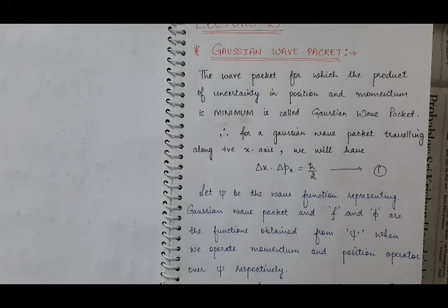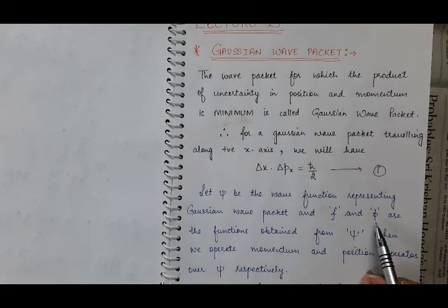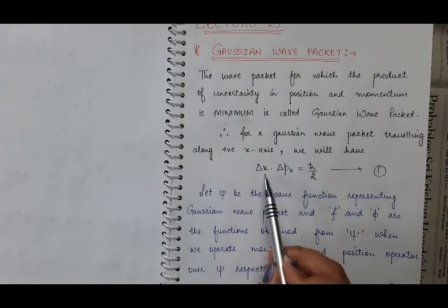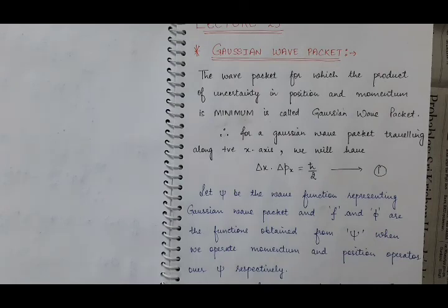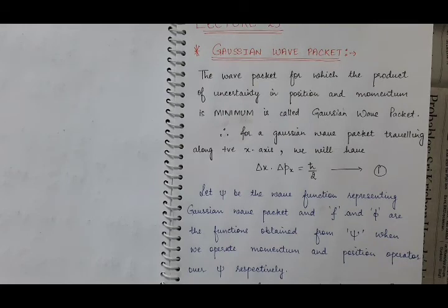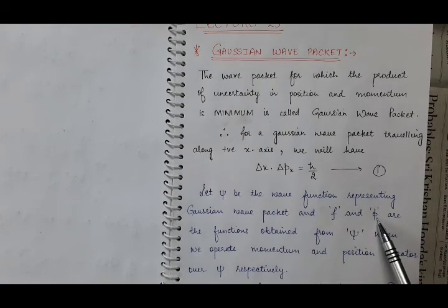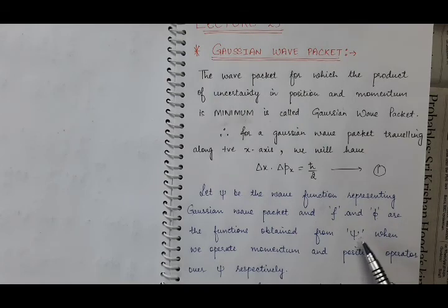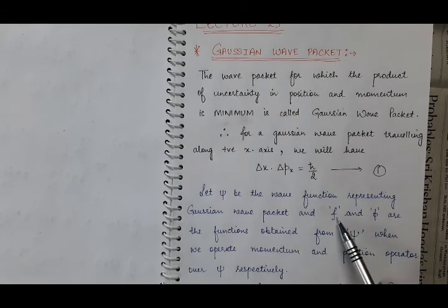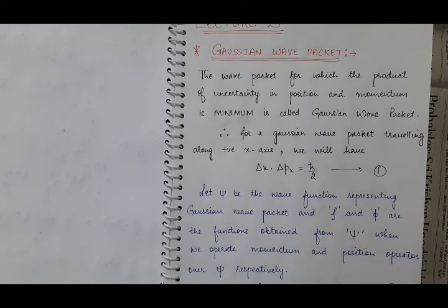For that, we have considered two functions: function f and function phi. In Heisenberg's uncertainty principle, we have position coordinate as well as momentum coordinate. It means we will deal with the position operator and the linear momentum operator. We will operate the position operator over psi, and it will give us a new function, suppose that function is phi. When we operate the linear momentum operator p over psi, then it will give us new function f.